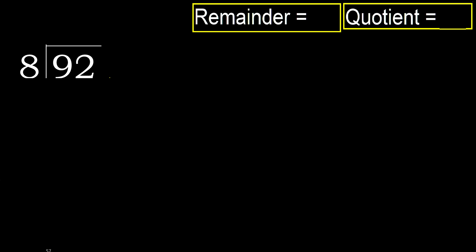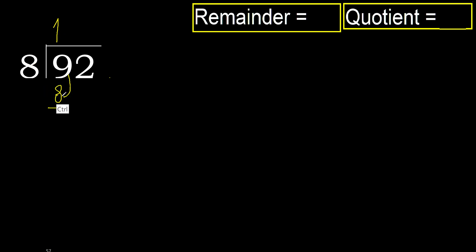92 divided by 8. 9 is not less — 8 multiplied by which number is nearest to 9 but not greater? 8 multiplied by 2 is 16, which is greater. 8 multiplied by 1 is 8, which is not greater. Subtract: remainder is 1.